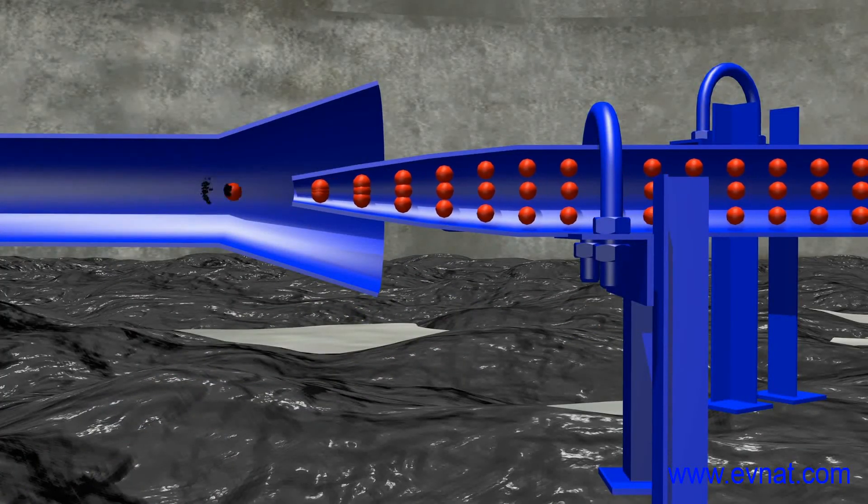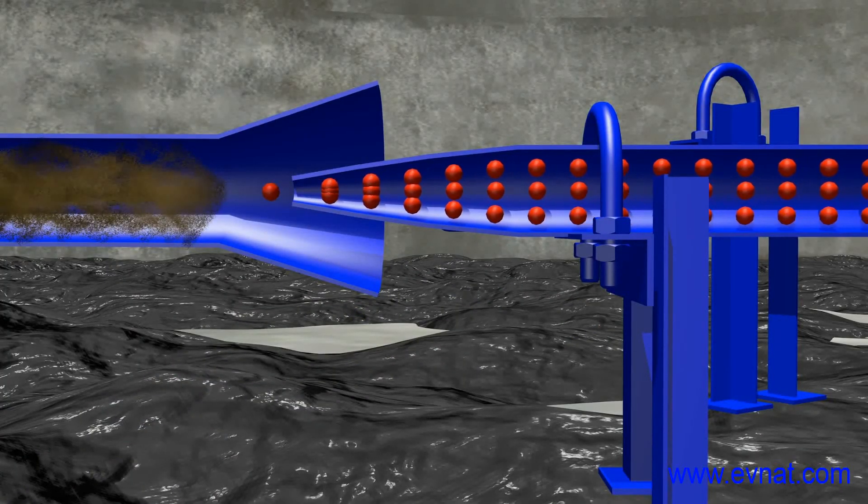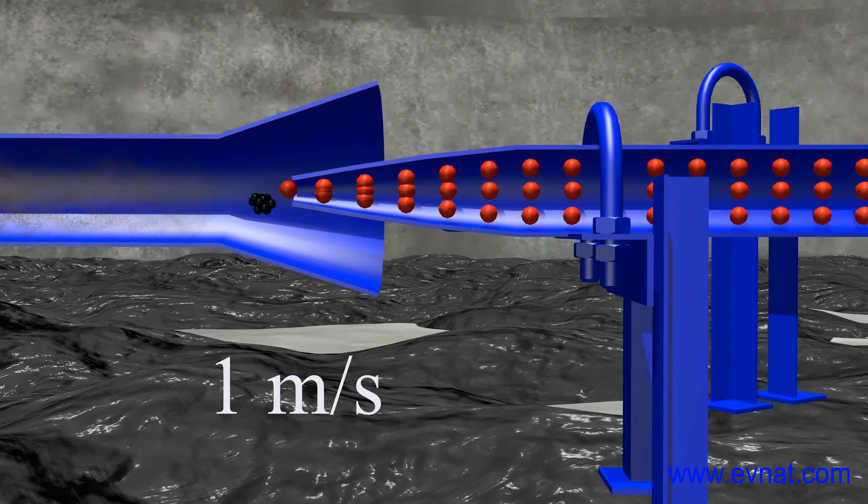Being torn away from the bottom and set into motion, dense particles of oil sludge are sucked through the convergent pipe at a speed of 1 meter per second.